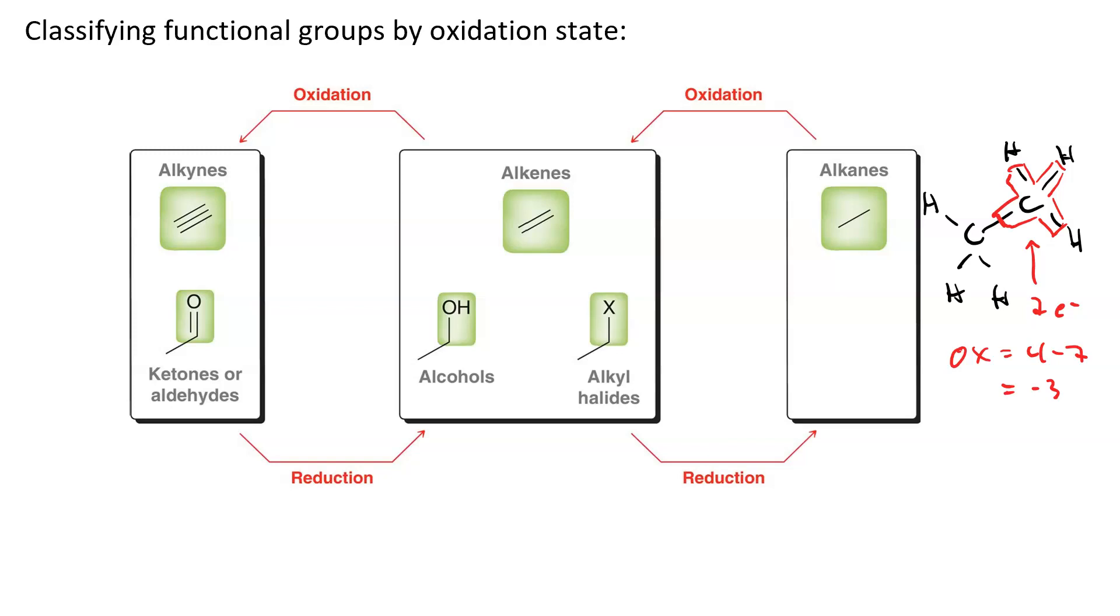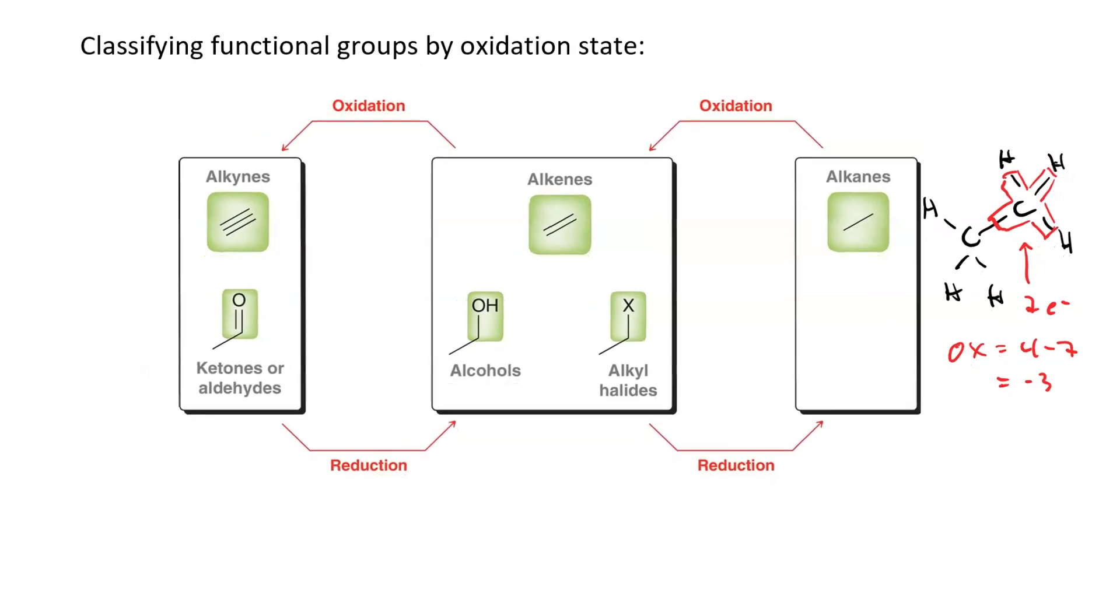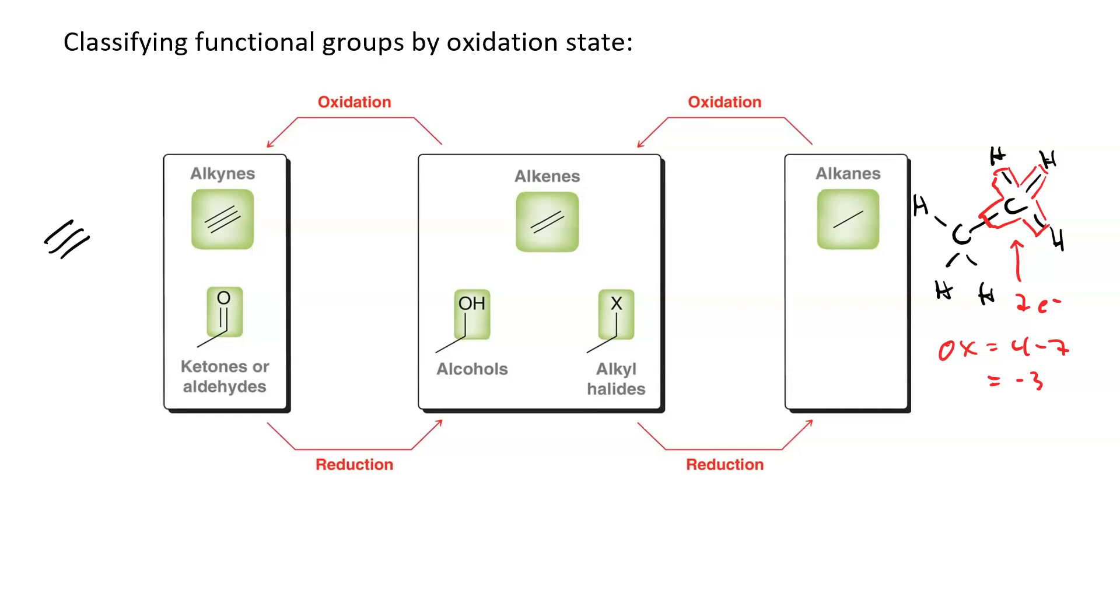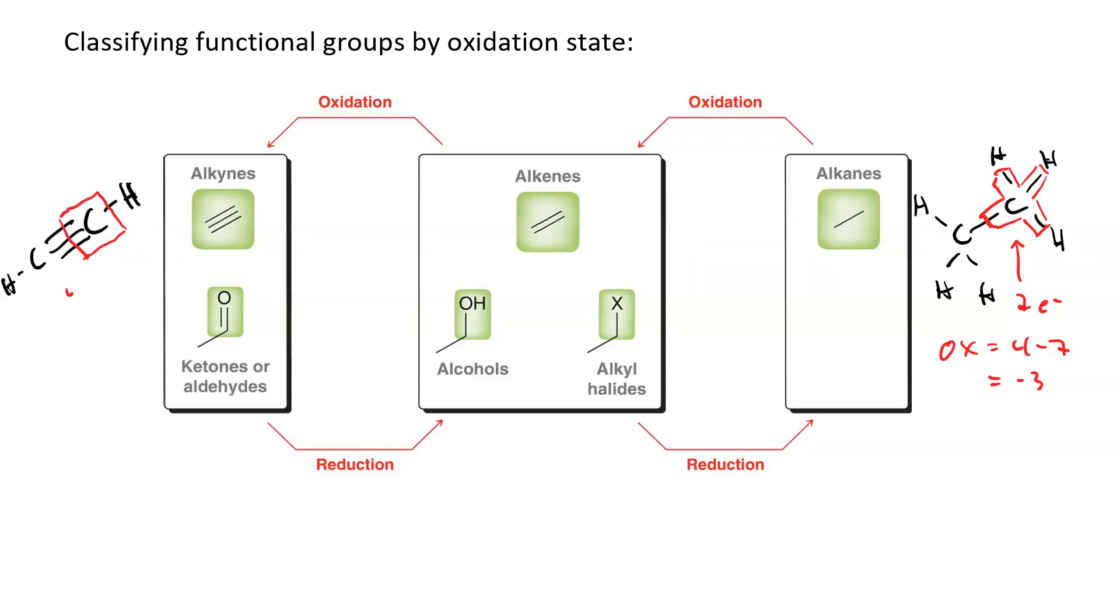Now let's go over and look at an alkyne. Here's ethyne. So here my oxidation number is 4 minus 4, I'm sorry, 4 minus 5, which equals negative 1.